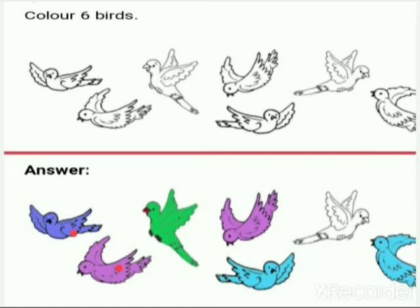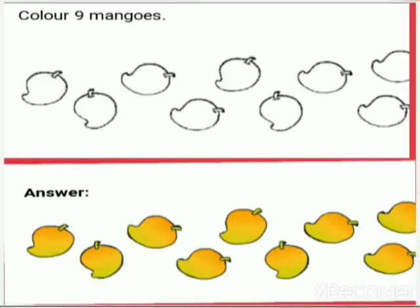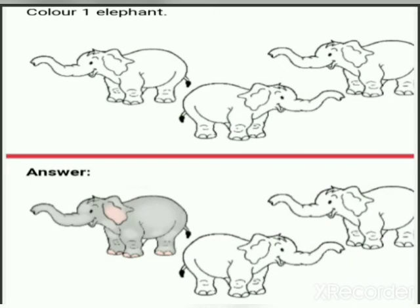One, two, three, four, five, six — color nine mangoes. There are nine mangoes, so color all the mangoes. Color one elephant. There are three elephants; children, you have to color only one elephant.